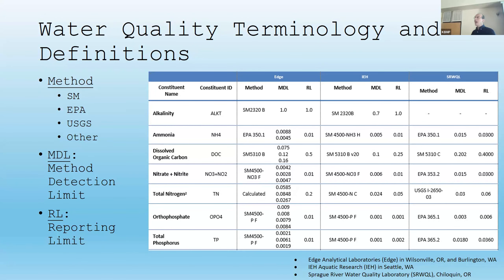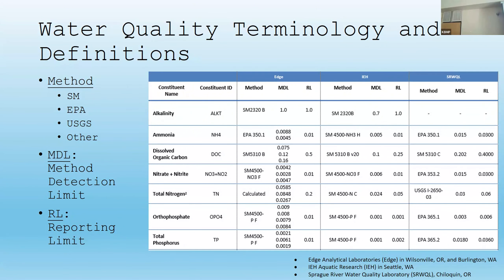MDL means I can detect it, but it does not mean I can reproduce it every time. And what is science based on? Reproducibility. So we have reporting limits, which are typically higher than the method detection limit. The laboratory will say: I'm confident I can reproduce that number for you — not exactly, but within a range. If we all took data sondes out and measured temperature, they would not all read 11.18. They'd be a range, but we could agree to report temperature between 11.1 and 11.2 — that's good enough for the science we're doing here.